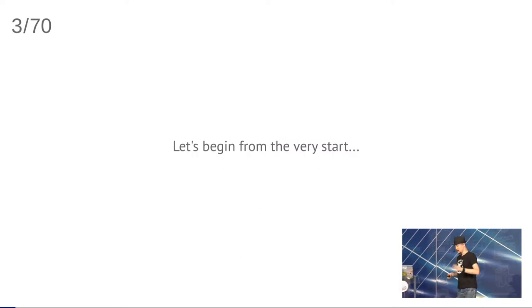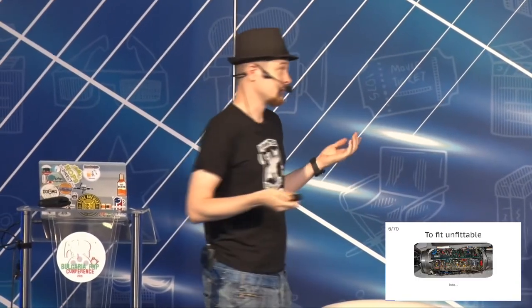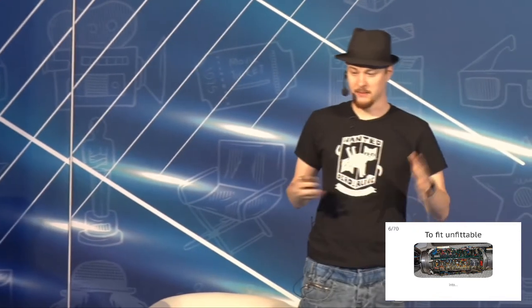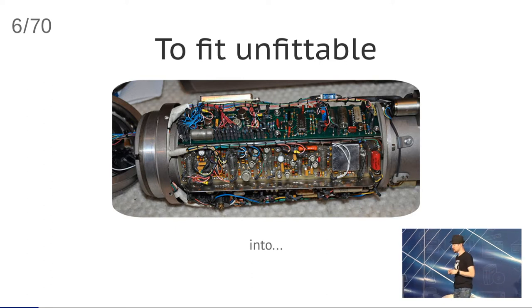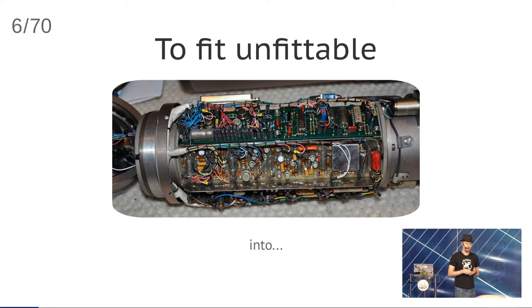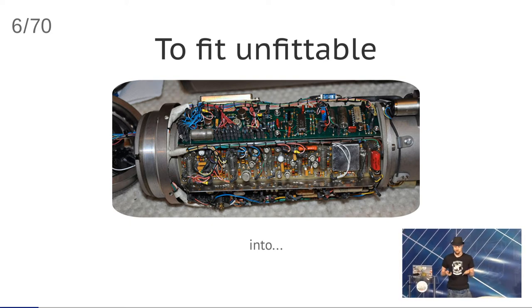Let's begin from the very start. What is abstraction? Abstraction is a generalization of the essential and throwing out everything that is non-essential. It sounds quite simple, but in fact it's not. What is it for? Well, to fit the unfittable. Normal humans cannot manage certain things because everything is in one layer — it's complicated, it's complex, and you forget what is connected with what very quickly.